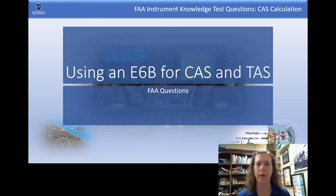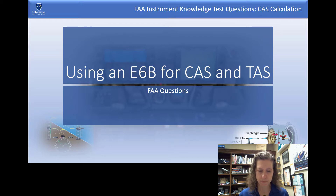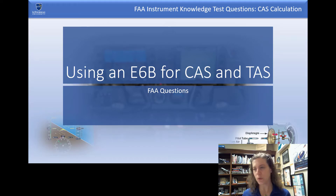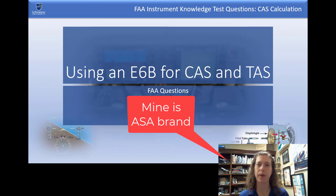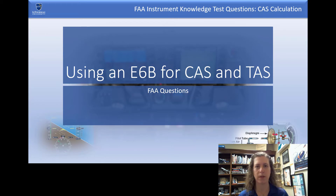If you're studying for the FAA instrument pilot knowledge exam, you might be using a book like this and seeing that there are a fair amount of questions that talk about figuring out the calibrated airspeed needed to maintain your filed true airspeed. The questions give you different airspeeds, temperature settings, and altitudes. If you're wondering how to do that and you have a metal E6B, this is a handy skill to have and it's pretty simple.